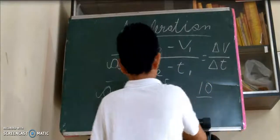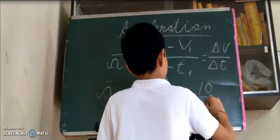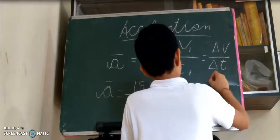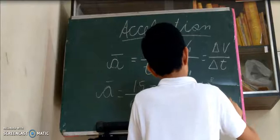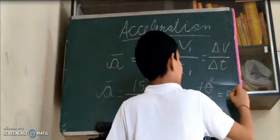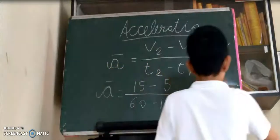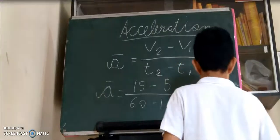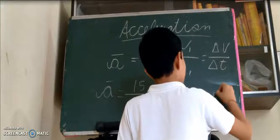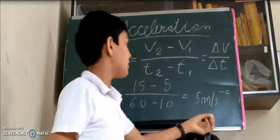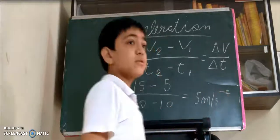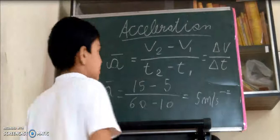10 upon 50. The answer is 5. Highlight answer here. 5 meter per second raised to power minus 2. If you find acceleration, it is required to write the power minus 2. It is the unit of acceleration.